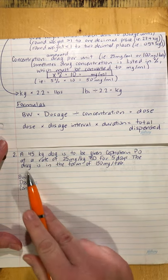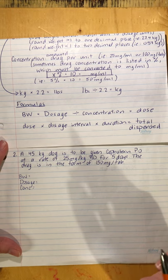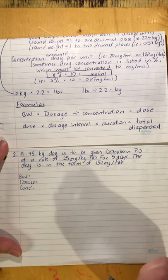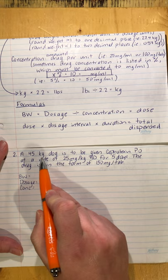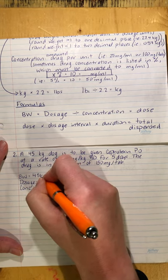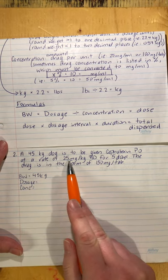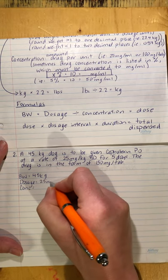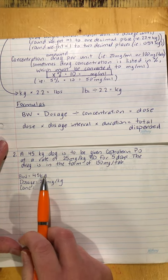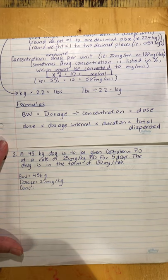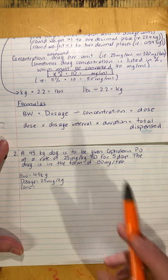It helps to write everything down step by step when you're first getting started so you don't miss any steps. Body weight: 45 kilogram dog. Dosage: 25 milligrams per kilogram. Comparing body weight and dosage — both in kilograms — so no converting needed. Drug concentration: 150 milligrams per tablet.